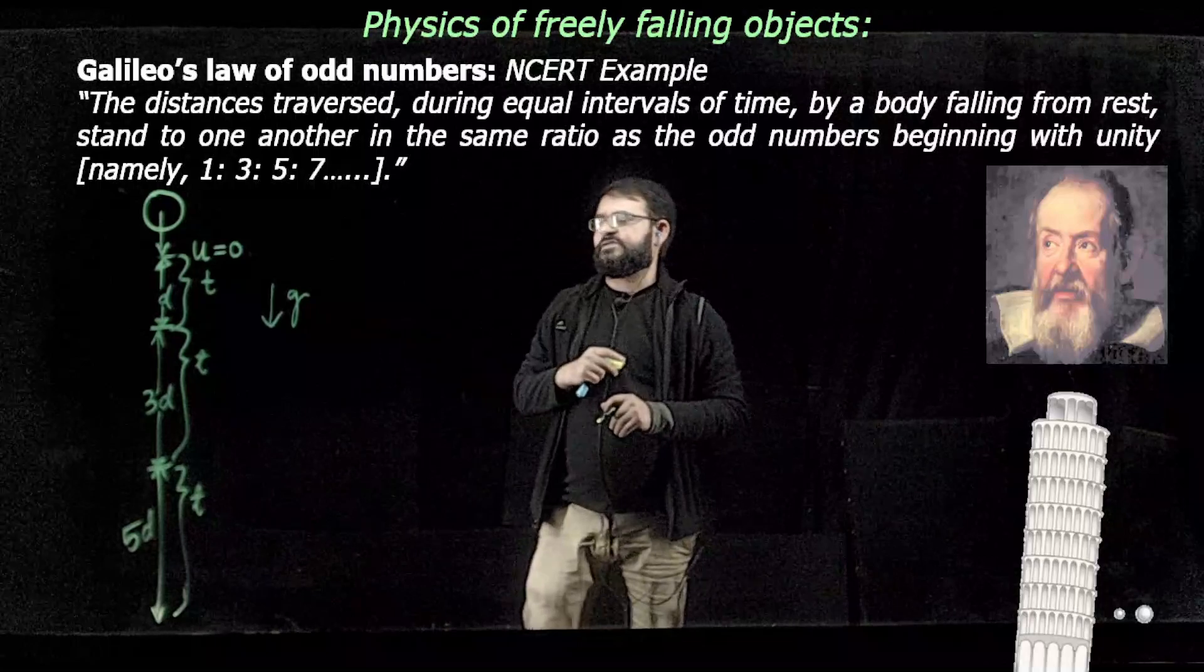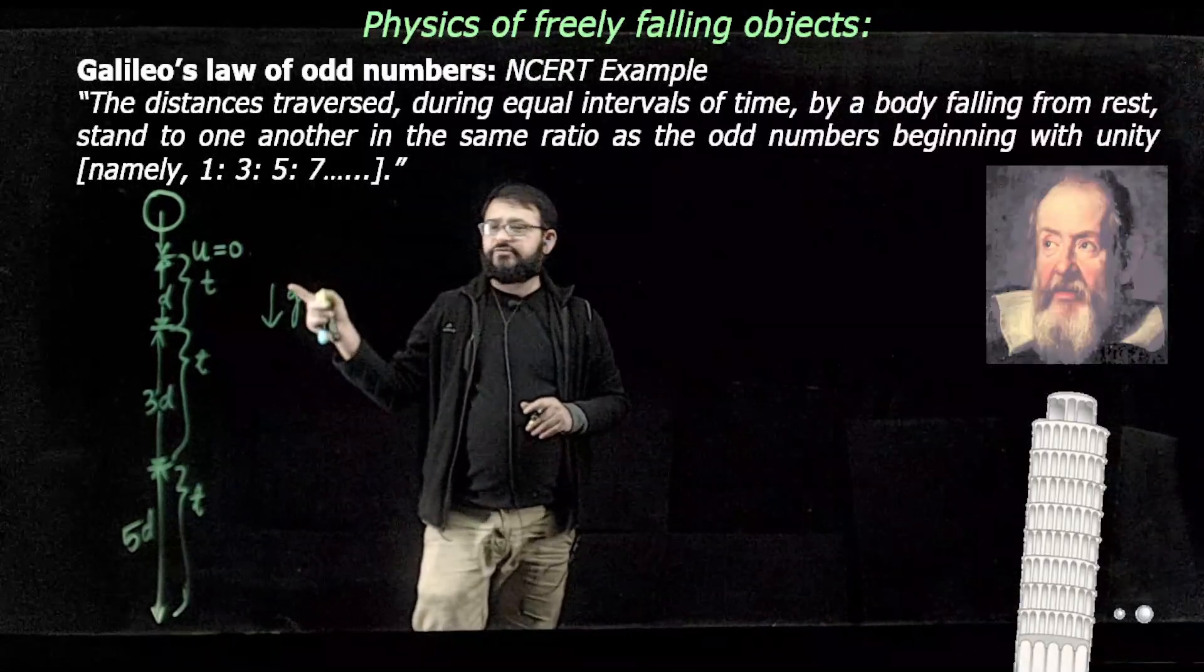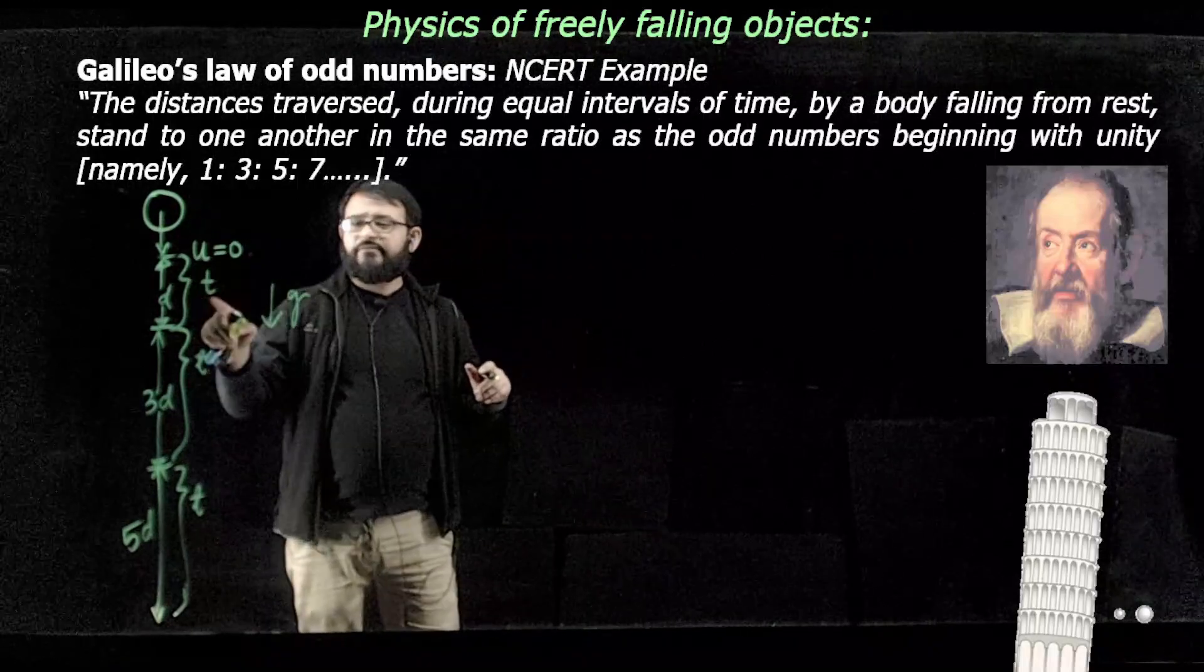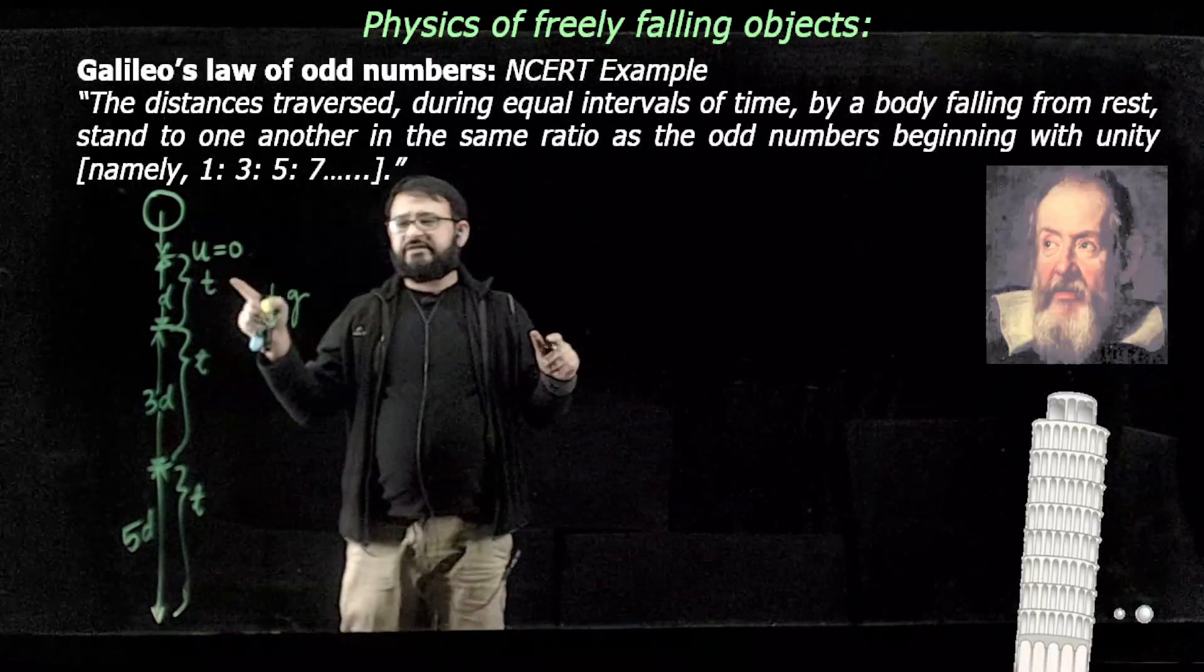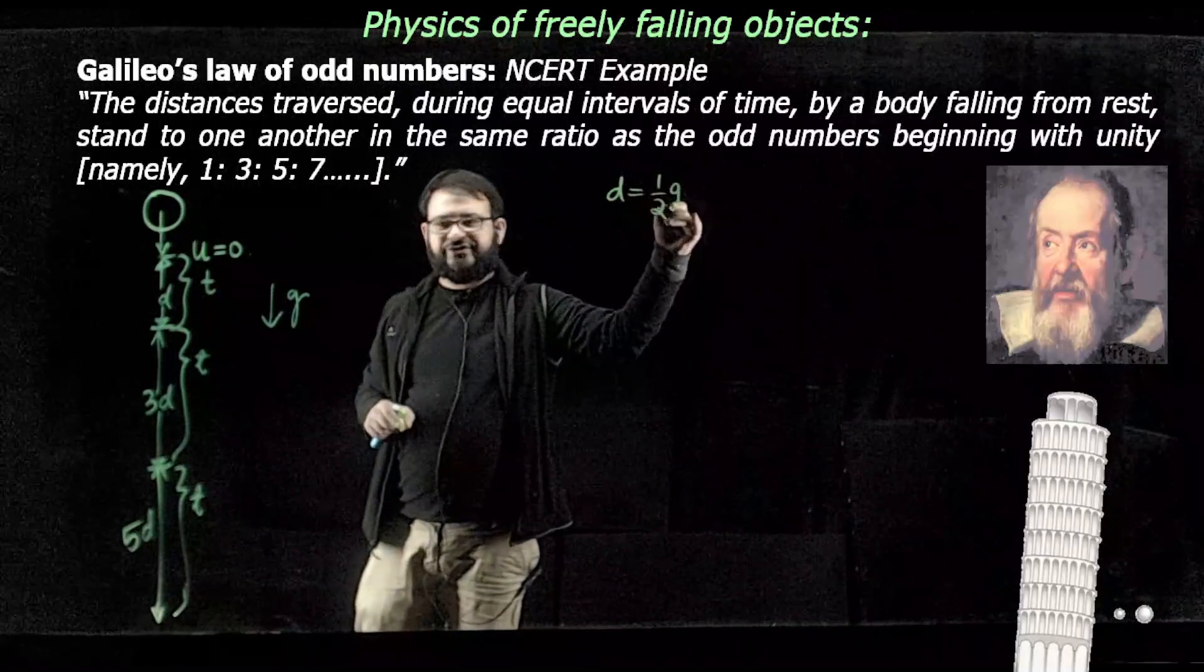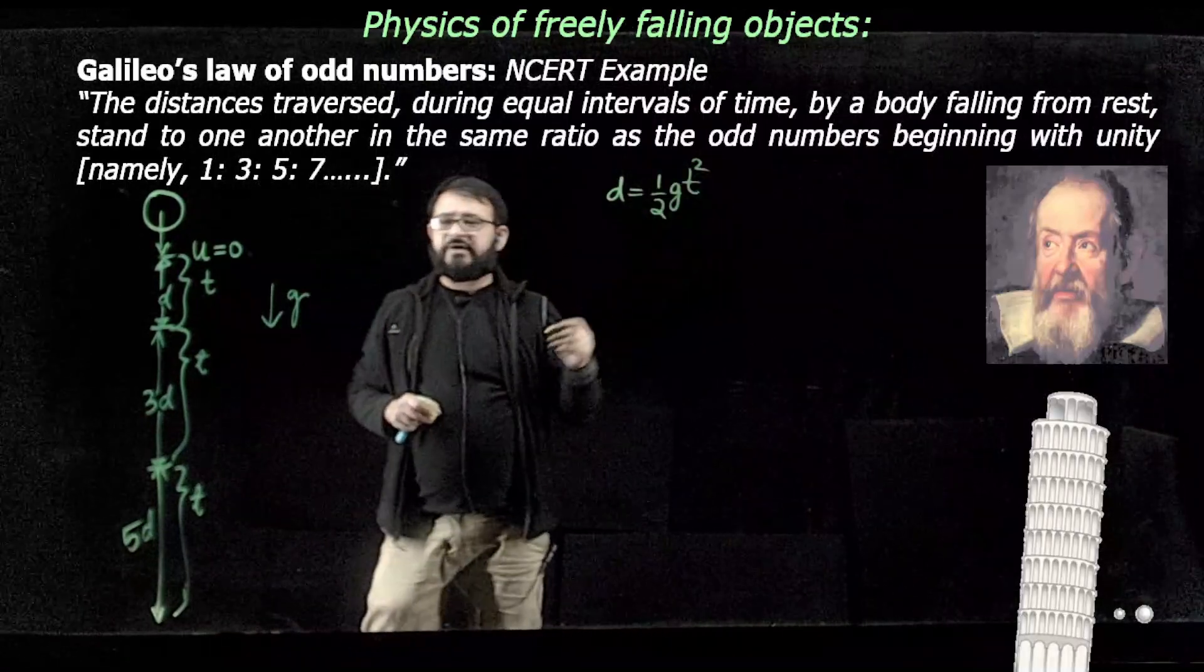Let us prove this. This is a very striking idea, but it leads to a very beautiful odd number series. So the time for the first interval is T. Therefore, you can clearly write D equals half g T squared. This is from simple kinematics.